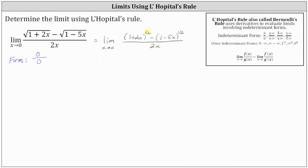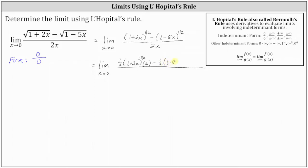Now we'll determine the derivative of the numerator and denominator. The derivative of the quantity one plus two x to the one half is one half times the quantity one plus two x to the power of negative one half, times the derivative of the inner function one plus two x, which is two. Then we have minus the derivative of the quantity one minus five x to the one half, which is one half times the quantity one minus five x to the power of negative one half, times the derivative of one minus five x, which is negative five.